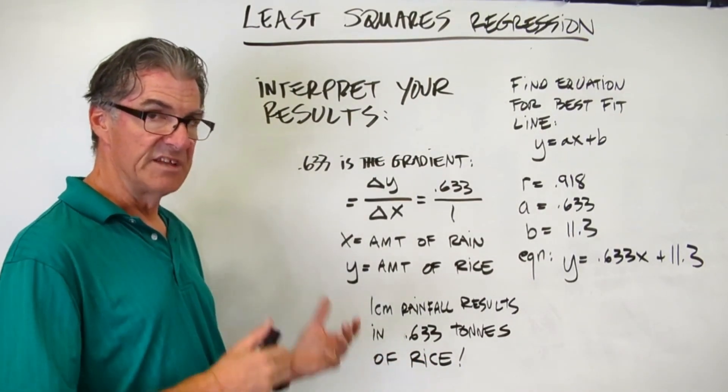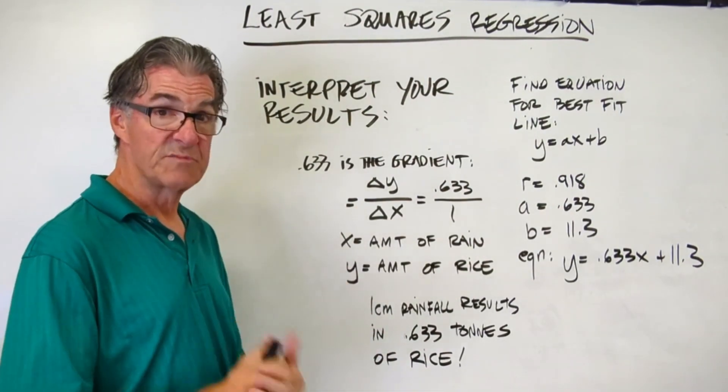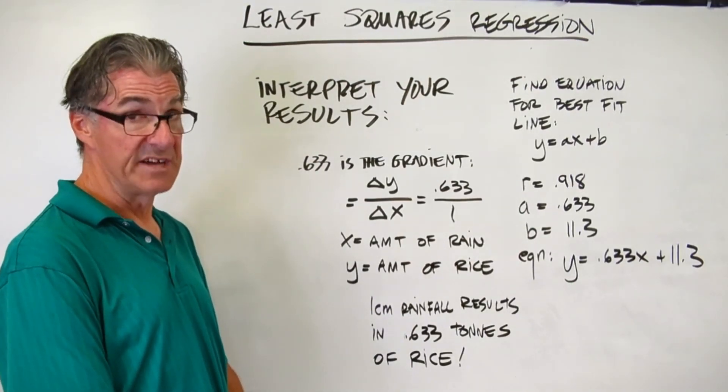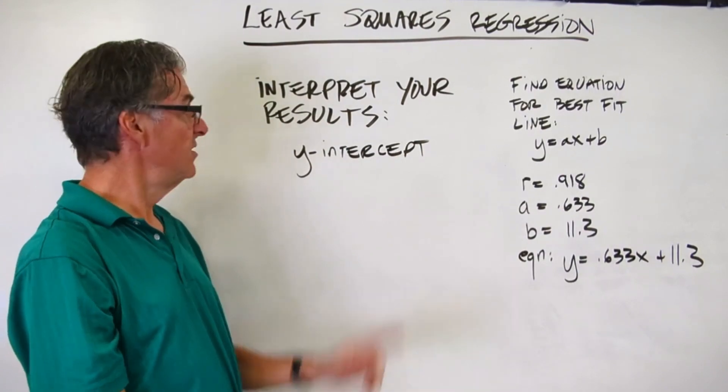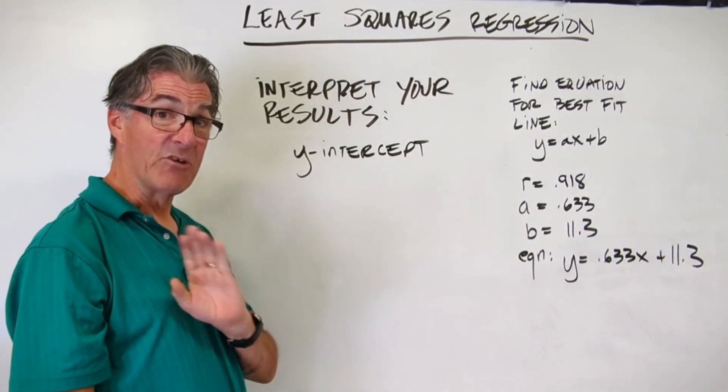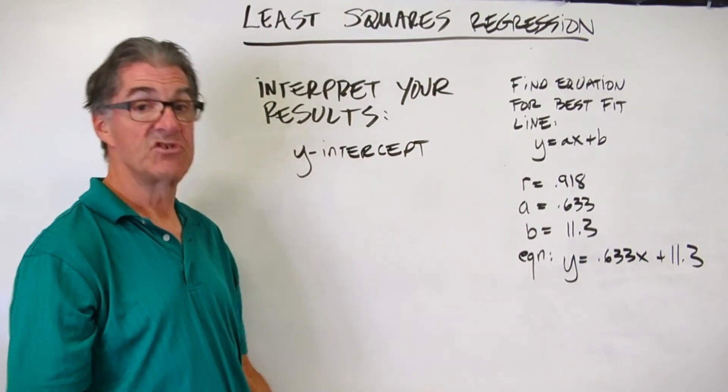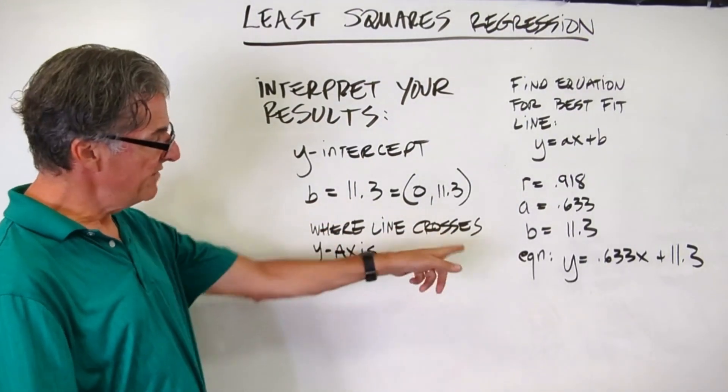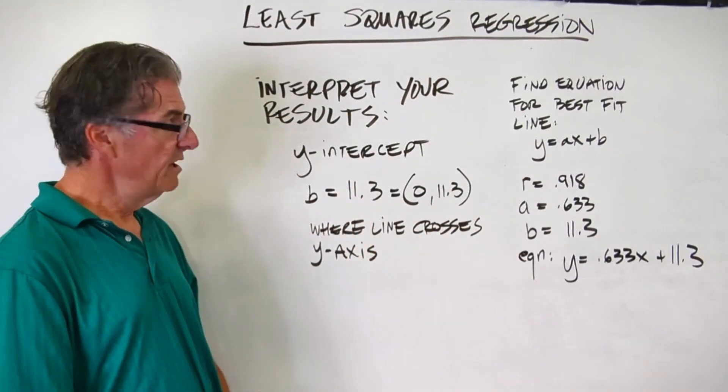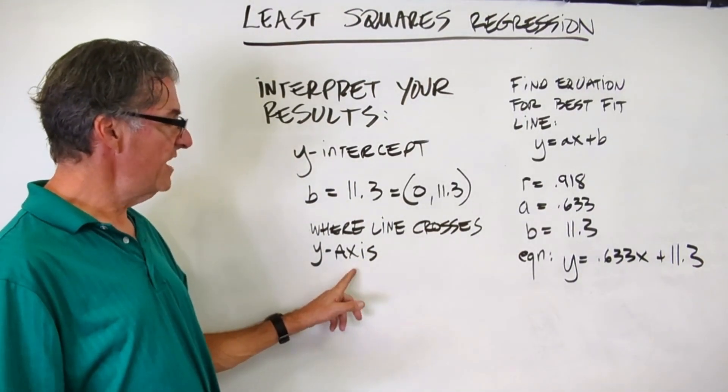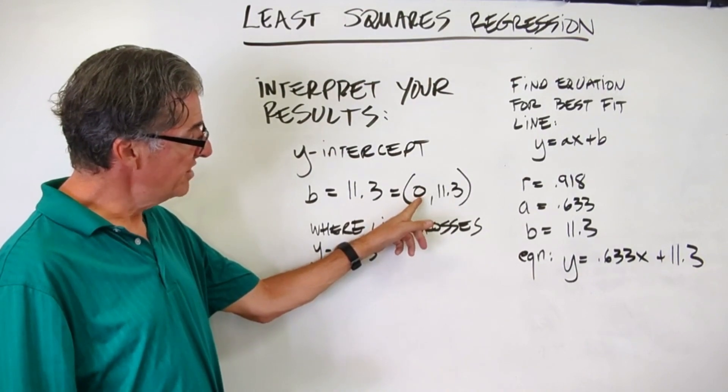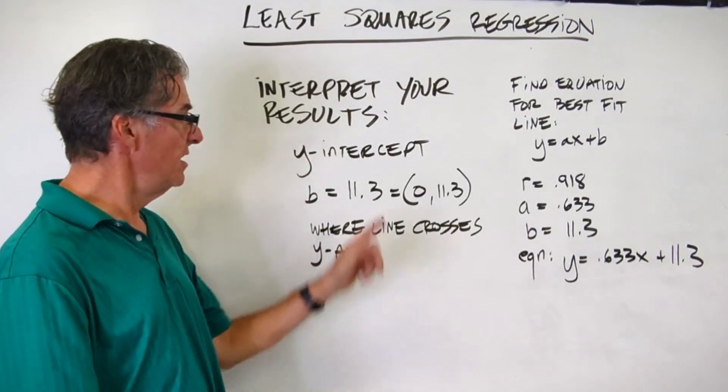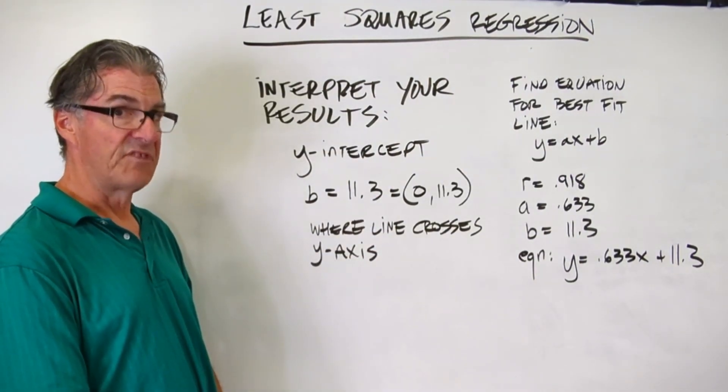Now, remember, this is an estimate. It's not a perfect correspondence. We don't have a perfect correlation, but it's going to allow us to do a pretty good job of estimating. Now, let's interpret the other component, the y-intercept. I want you to pause the video and think real hard. What is the y-intercept in terms of our scenario? Think real hard and jot something down. Let's see how you did. So that's my B value, that's the y-intercept, that's 11.3. Now, it's a y-intercept, it's where the line crosses the y-axis. So that point is 0, 11.3. Now, there's one more interpretation, perhaps the most important interpretation, to make regarding the intercept. So think about that and come back.